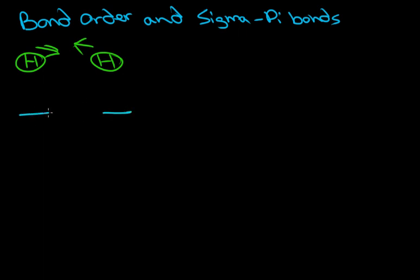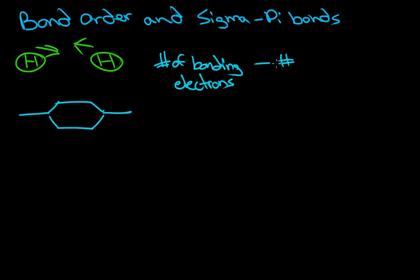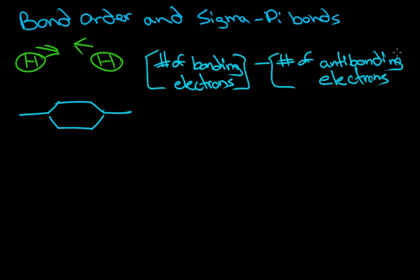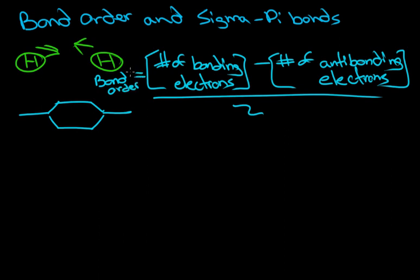As you bring them together, they're going to form molecular orbitals. If you put this in a molecular orbital diagram, we can calculate the bond order. The formula for bond order is you take the number of bonding electrons minus the number of anti-bonding electrons, then divide the whole thing by two. That's what your bond order equals.